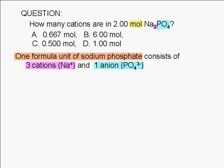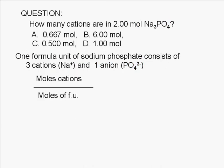It should be obvious that the number of formula units and number of ions are directly proportional quantities. When two quantities are directly proportional, the ratio is constant. In other words, we can say that the ratio of the number of cations to the number of formula units is equal to three moles of sodium ions to one mole of sodium phosphate units.